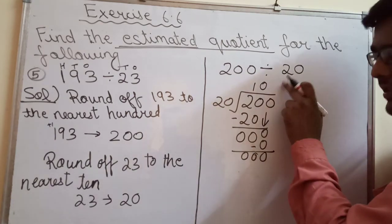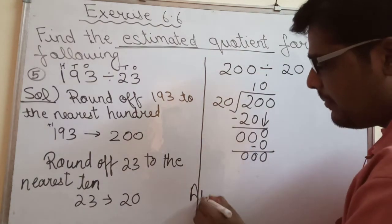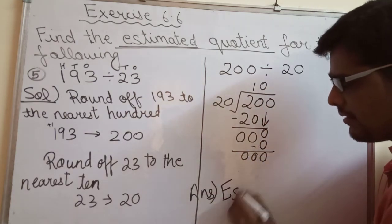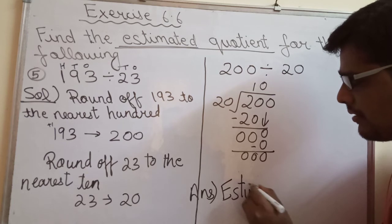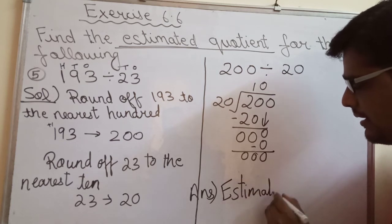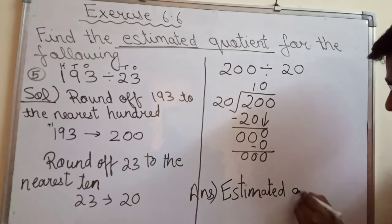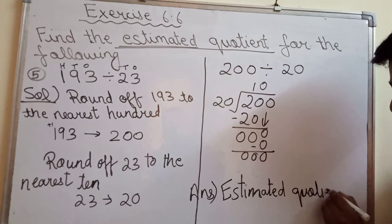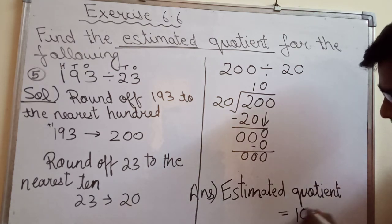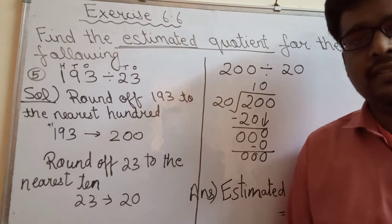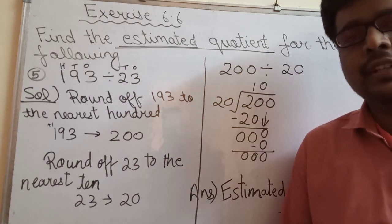Quotient kitna aaya? 10. And remainder is 0. So, estimated quotient - answer aap likhoge last mein. Estimated quotient is equal to 10. So this will be your answer. I hope you have understood.